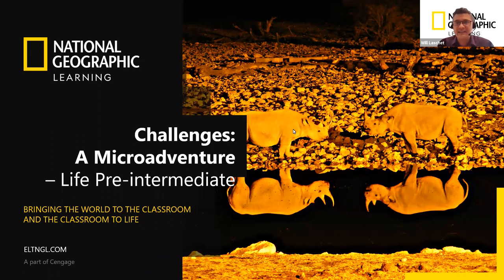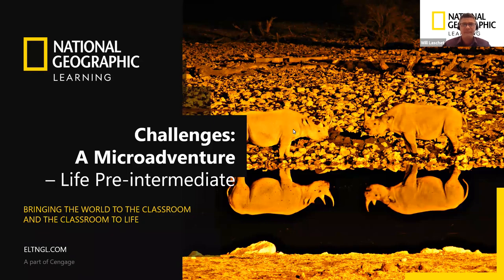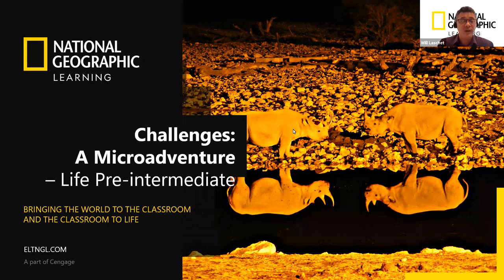Let's have a look at today's lesson. It's from Life Pre-Intermediate, unit four, and it's called 'A Micro Adventure.' We're going to send you — Kitty, can you put the link in for the Life website? If at the end of the session you'd like to visit the website, you'll find a lot of information about the program called Life. Make sure you save the URL, which you can now see in the chat box.